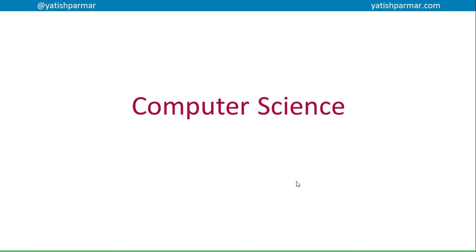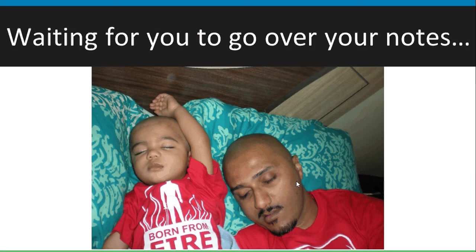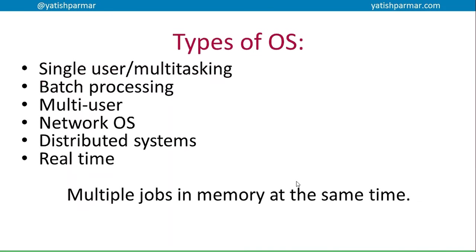This is Mr. Palmer - take three of another video on computer science. Health warning: before you continue with this video, make sure you go over your notes on operating systems and multitasking. Hopefully you've gone over the types of operating systems: single user, multitasking, batch processing, multi-user - where multiple users can log in and use the same CPU - network operating systems, and distributed systems.